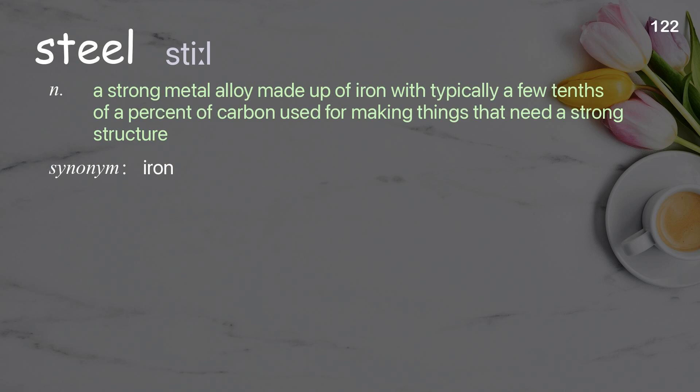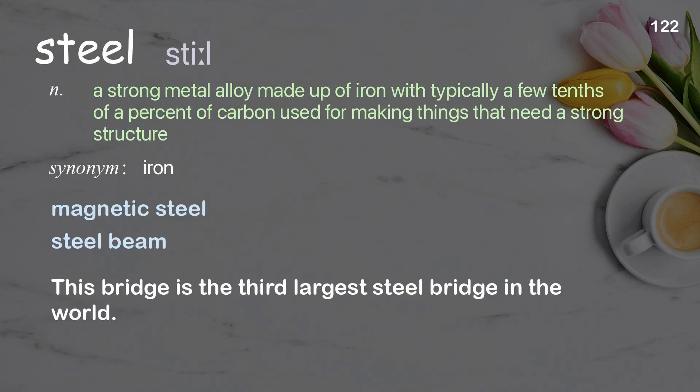Steel: a strong metal alloy made up of iron with typically a few tenths of a percent of carbon, used for making things that need a strong structure. Examples: magnetic steel, steel beam. This bridge is the third largest steel bridge in the world.